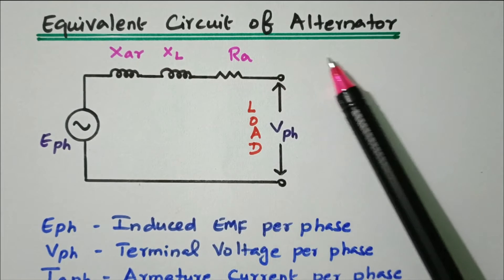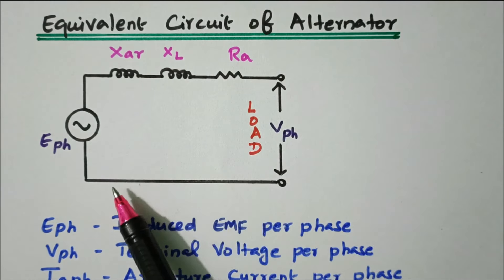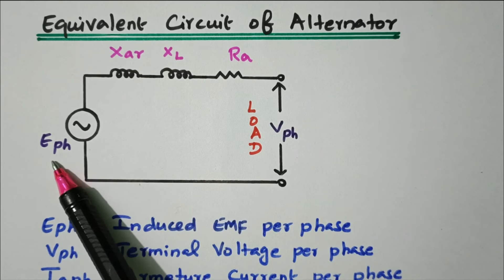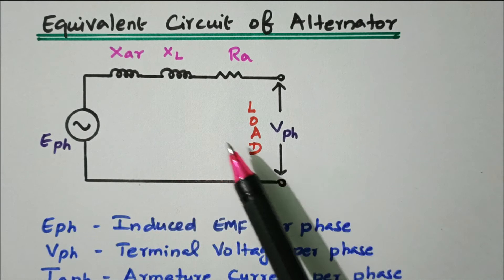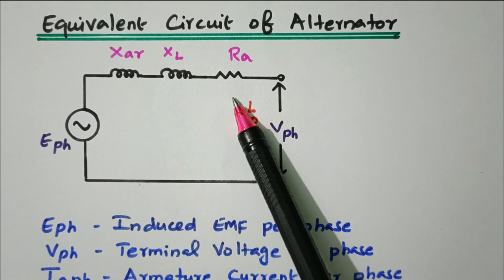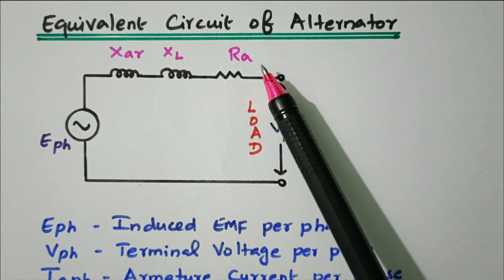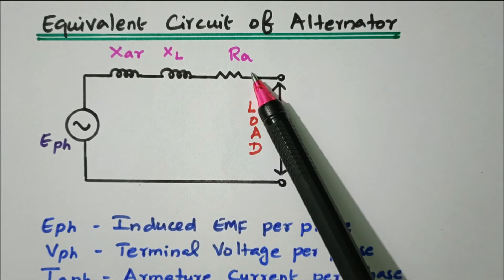Now we'll go to the topic: equivalent circuit of the alternator. This is the equivalent circuit. E-phase is the generated EMF in the alternator. V-phase is the voltage available at the load terminal. In between, the drop is the resistance drop and reactance drop. RA is the armature resistance per phase, so some voltage is dropped across RA.